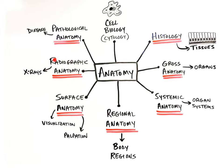Radiographic anatomy is the study of body structures that can be visualized using x-rays. An image made using x-rays is called a radiograph. Pathological anatomy is the study of the body's structural changes that are associated with disease. The prefix patho refers to disease or suffering.